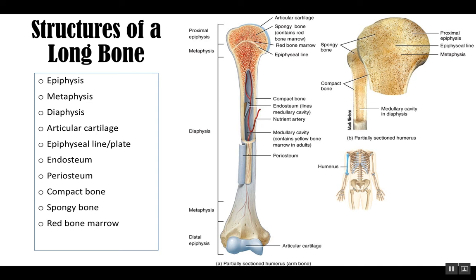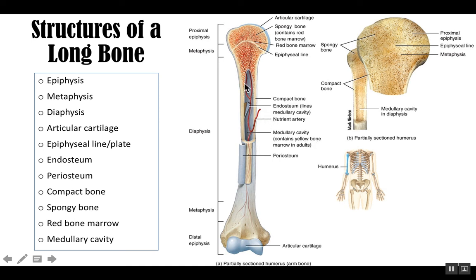Red bone marrow is found in these little spaces of spongy bone. And lastly, we see the medullary cavity, which helps lighten the bone. These long bones are not solid bone tissue — they would be way too heavy. The medullary cavity contains a lot of marrow — mostly yellow bone marrow — while red bone marrow is found more in the spongy bone.